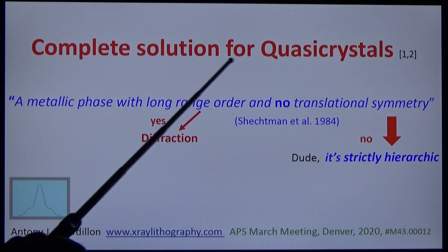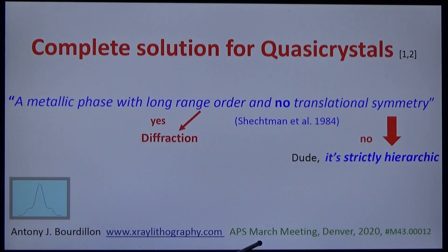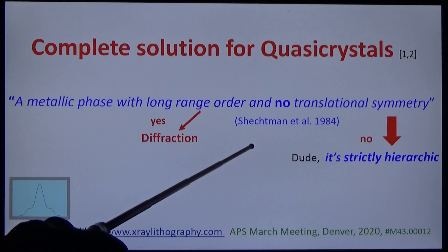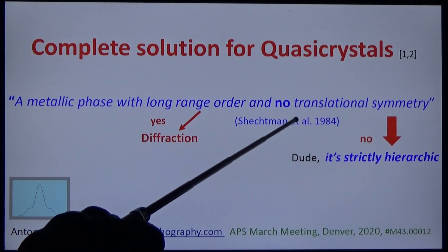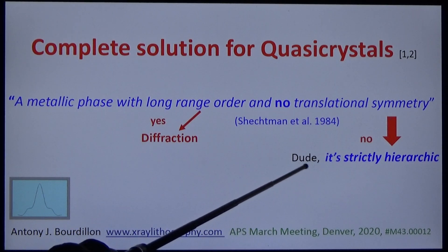The complete solution for quasi-crystals was accepted by the APS March meeting that was cancelled because of COVID. The greater the prize, the worse the goof. Shetman claimed long-range order with no translational symmetry. Doomed.